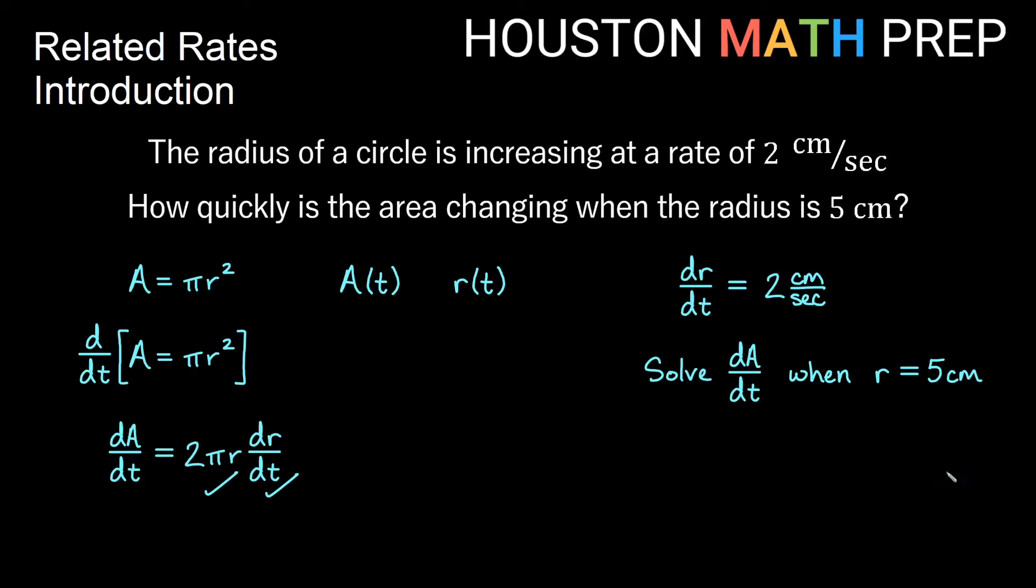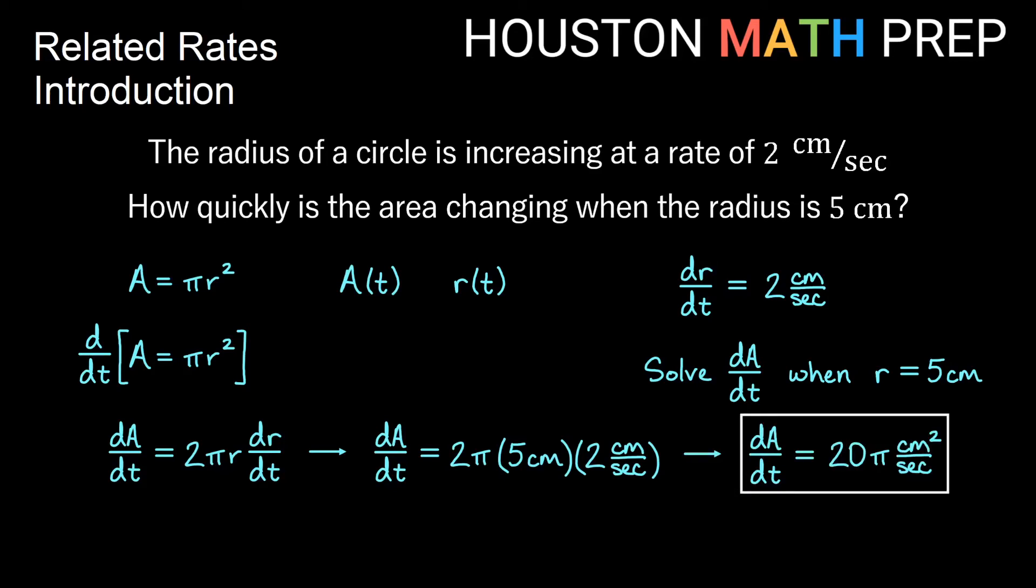So I can simply plug both of these quantities into my equation, and I get dA/dt is equal to 2π times r times dr/dt becomes times 5 centimeters times 2 centimeters per second. So if I multiply this all together, then we simply get 20π.